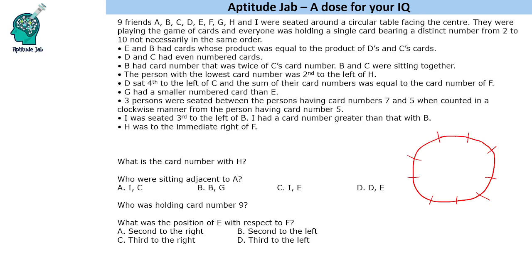The clues tell us: E and B had cards whose product was equal to the product of D's and C's cards, so E × B = D × C. The people are named A through I. At the same time, D and C had even-numbered cards, so D and C are both even.